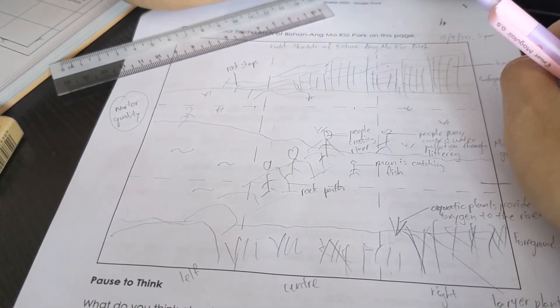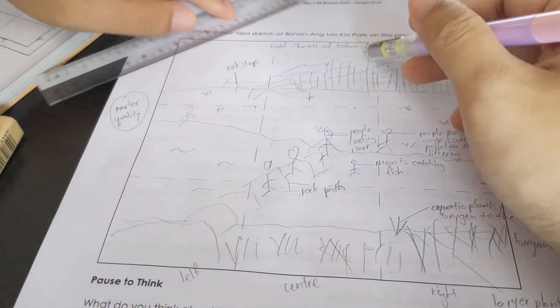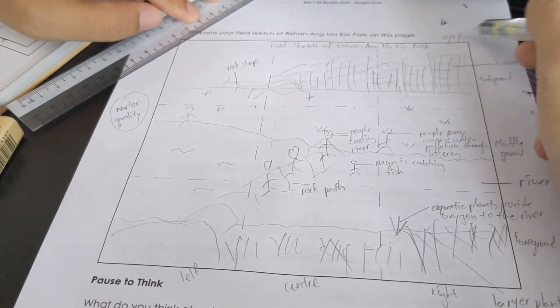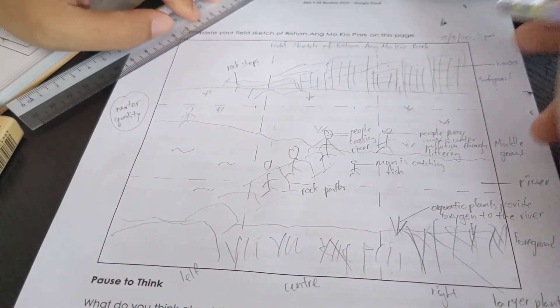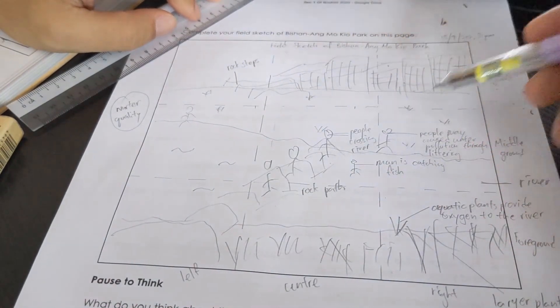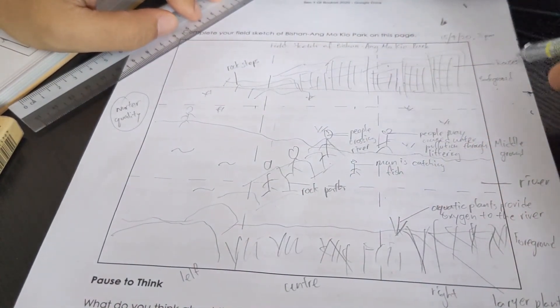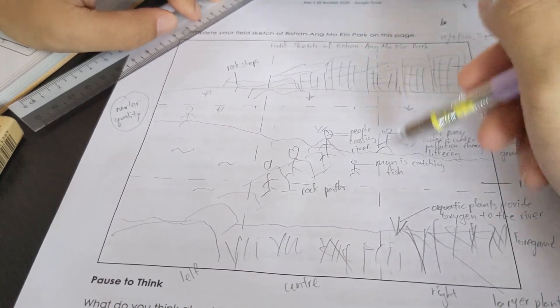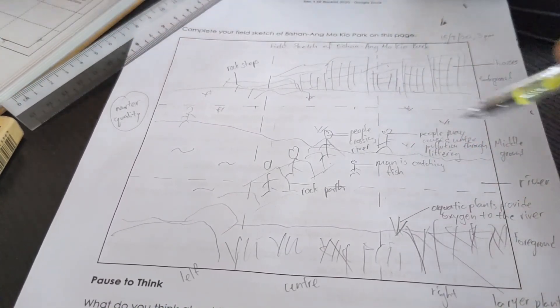And so once you have done your title, your day and date, your day, date and your time, as well as the foreground, background, middle ground, left, right, center, the labeling, and the annotations, you will have complete.